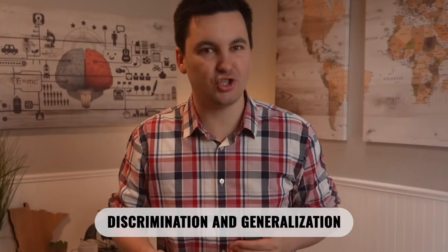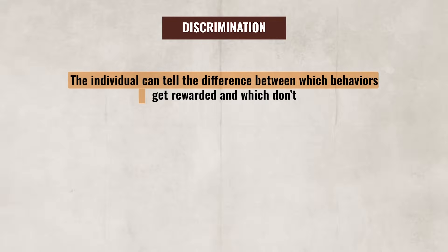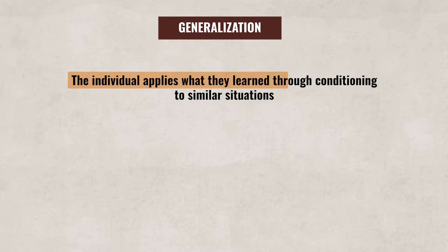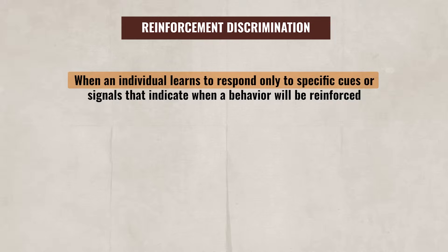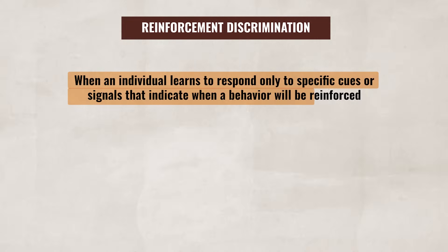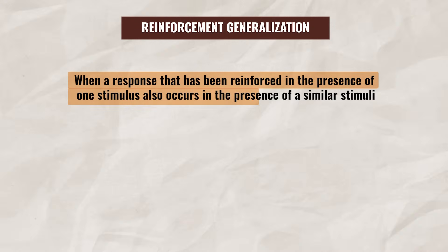Just like with classical conditioning, operant conditioning can also be impacted by discrimination and generalization. With operant conditioning, discrimination means that the individual can tell the difference between which behaviors get rewarded and which don't, while generalization means the individual applies what they learned through conditioning to similar situations. Reinforcement discrimination occurs when an individual learns to respond only to specific cues or signals that indicate when a behavior will be reinforced, while reinforcement generalization happens when a response reinforced in the presence of one stimulus also occurs in the presence of a similar stimulus.